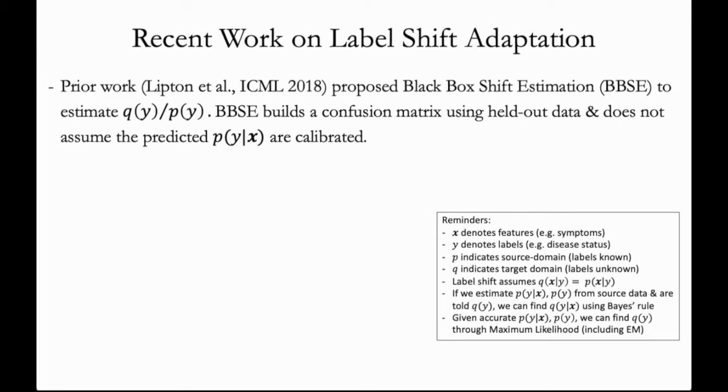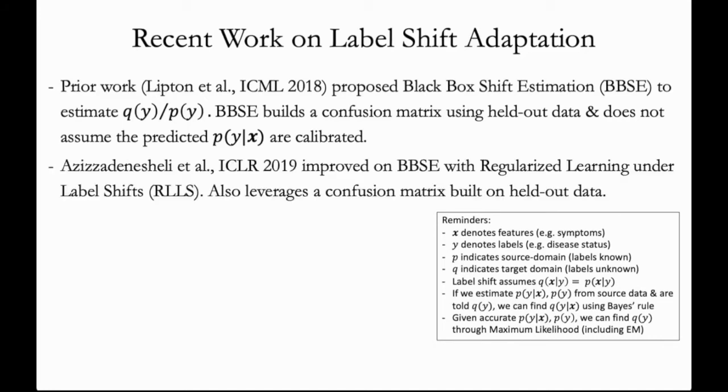Let's now turn our attention to more recent work on label shift adaptation. Prior work by Lipton and others proposed black box shift estimation or BBSE to estimate the class ratio q(y) divided by p(y). This approach works by building a confusion matrix using held out data, and it does not assume that the predictions p(y|x) are calibrated.